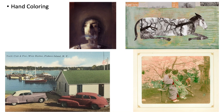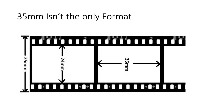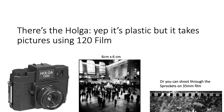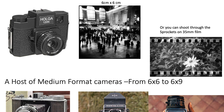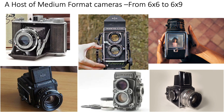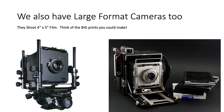35mm isn't the only format you'll use — also 24mm and 36mm, as well as the Holga. Yep, it's plastic, but it takes pictures using 120 film. You'll also learn a host of medium format cameras, from 6x6 to 6x9. We also have large format cameras too — they shoot 4-inch and 5-inch film. Think of the big prints you can make with these.